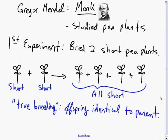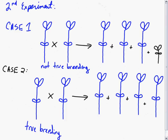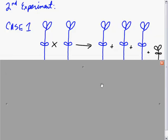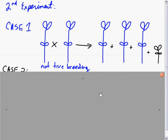In his second experiment, he took tall pea plants and he got two different cases. Let's focus on them here.